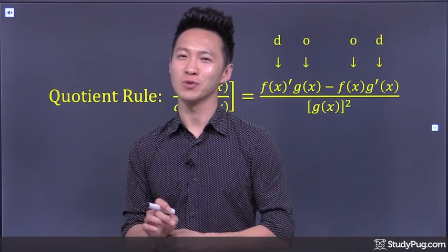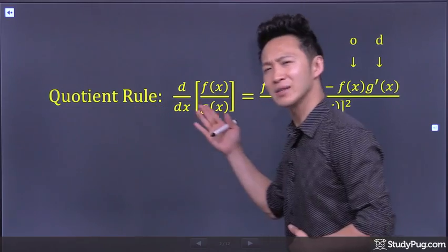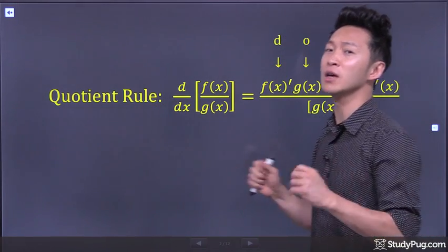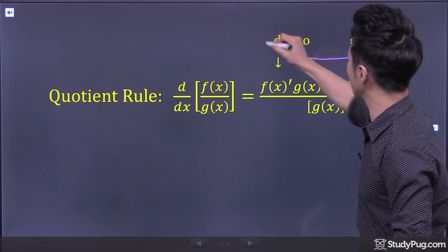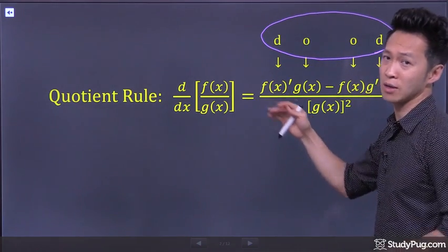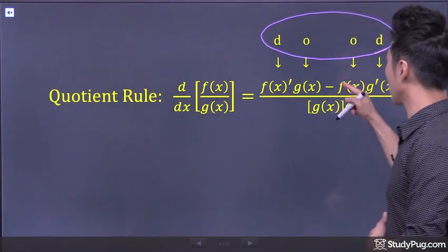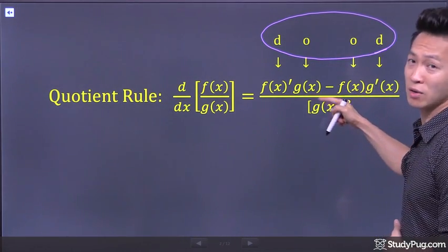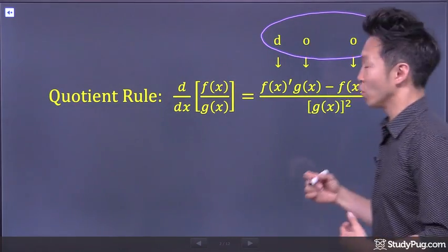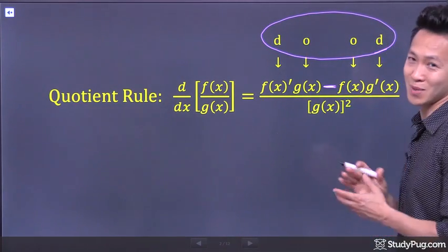Let's talk about the quotient rule. The way the quotient rule plays out is very similar to the product rule — we're still going to have a DOOD on top at the numerator. However, unlike the product rule where we have an addition in the middle, for the quotient rule we're going to have a subtraction in the middle.